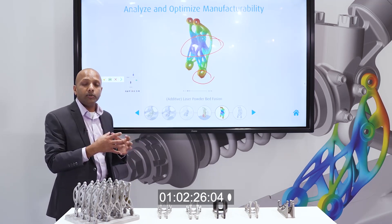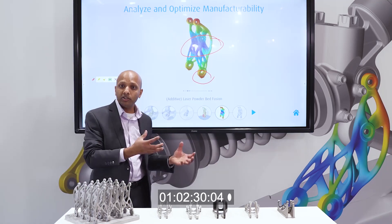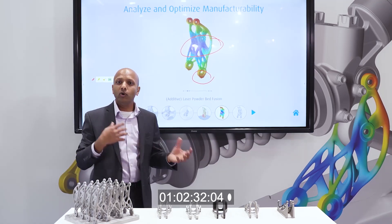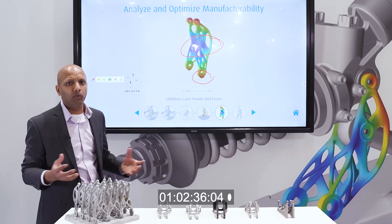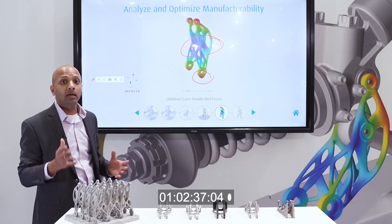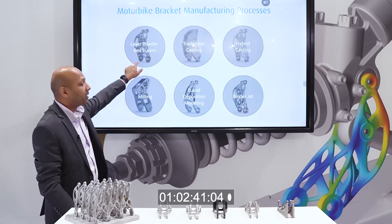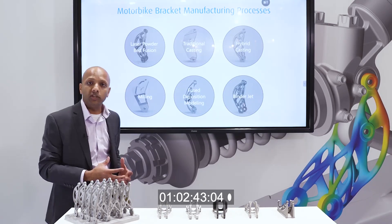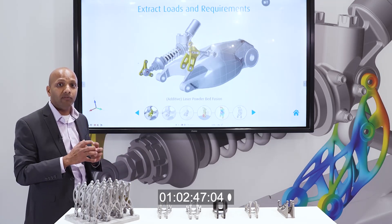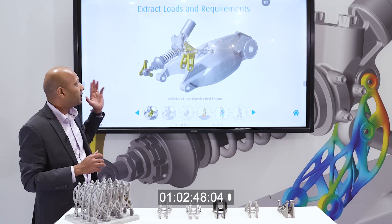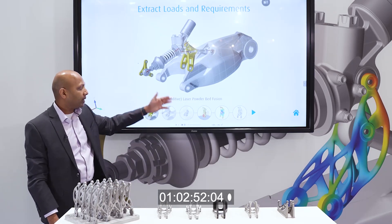Now I have two options. I can go back and start changing the print parameters in the printer machine and maybe do trial and error to figure out a successful print. But the better way is to go back to my designs and make design changes very quickly — very small design changes which won't affect the part itself, but will make the downstream print process easier.